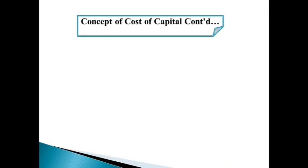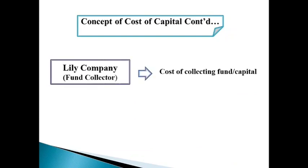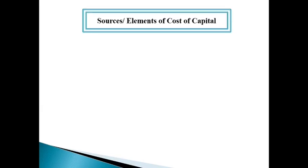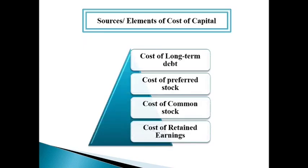We can define cost of capital from two perspectives. From the perspective of the fund collector, cost of capital is the cost of collecting fund or capital. From the perspective of the investor, cost of capital is the minimum required rate of return from an investment. A company can collect its long-term fund from four different sources: long-term debt, preferred stock, common stock, and retained earnings. Any cost related with these four sources will be termed as cost of capital for a company.